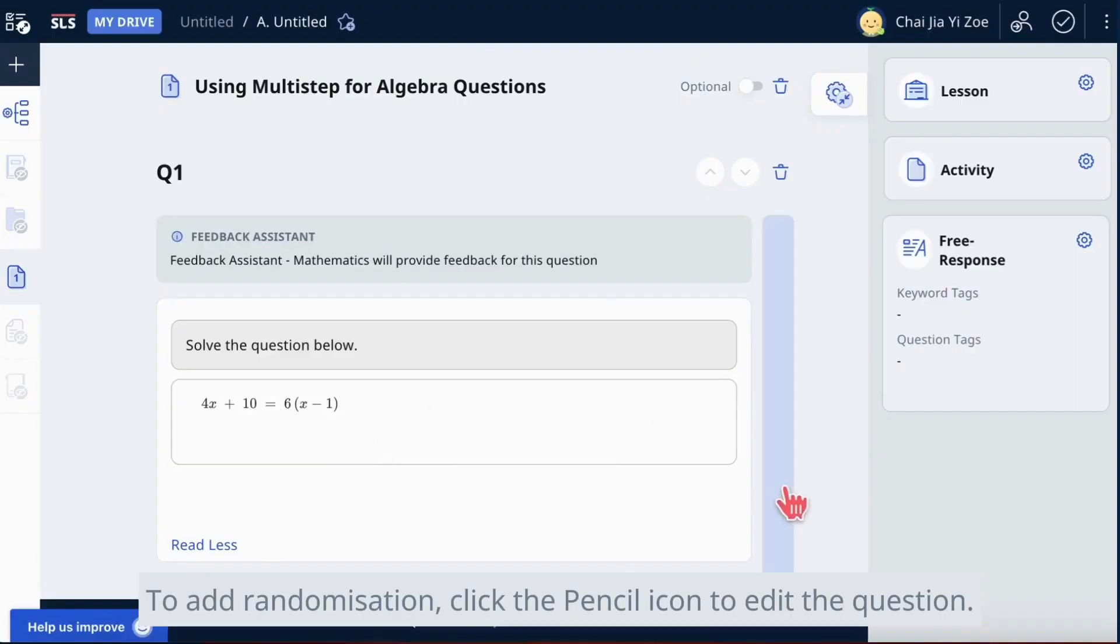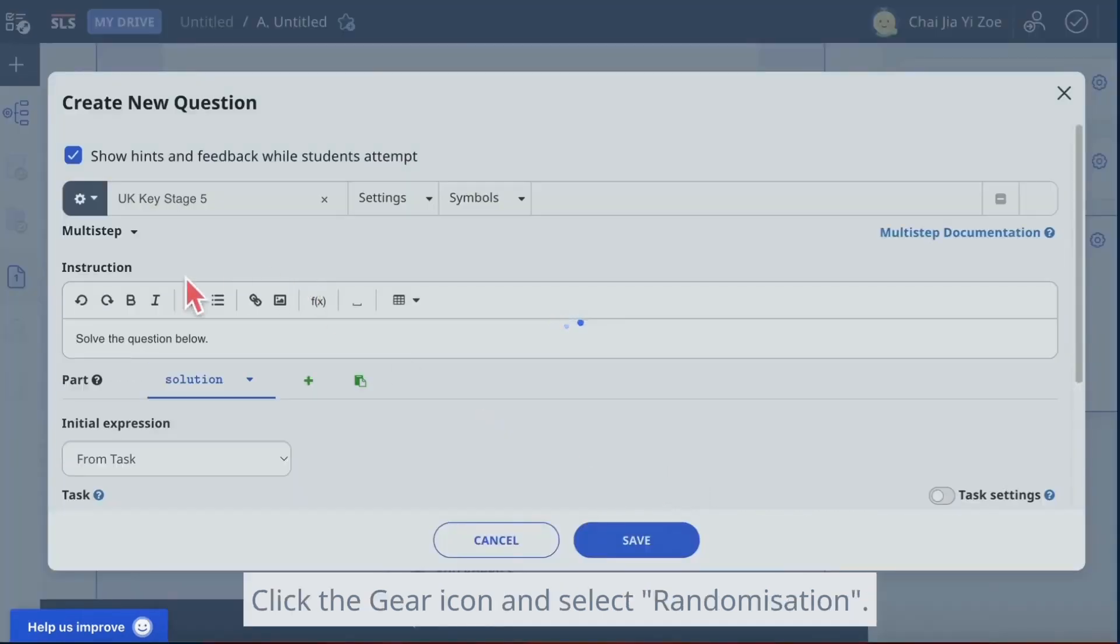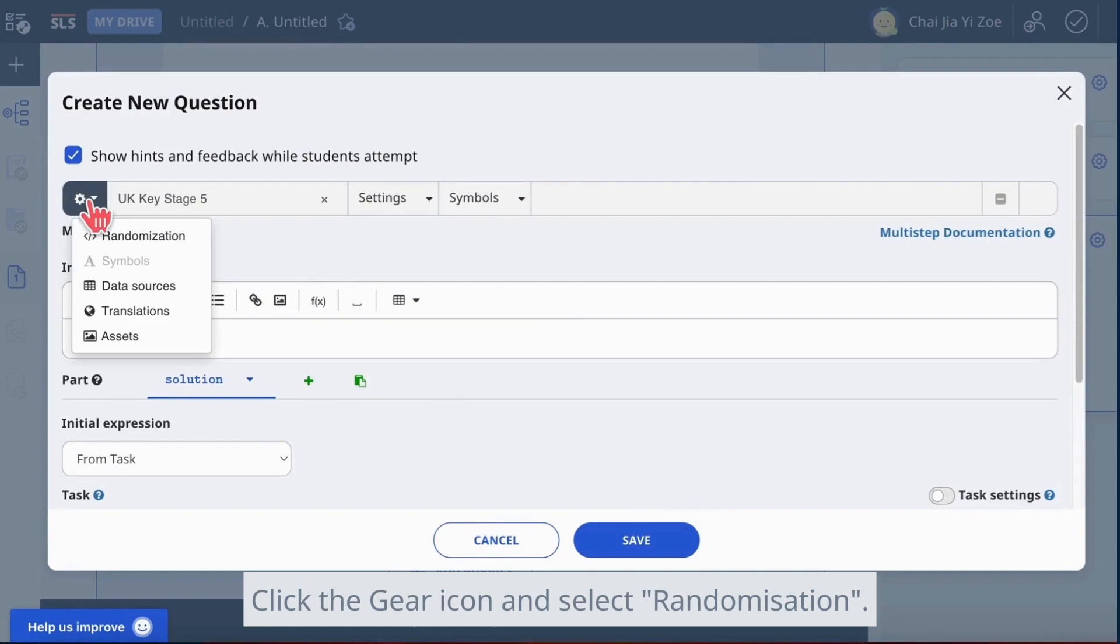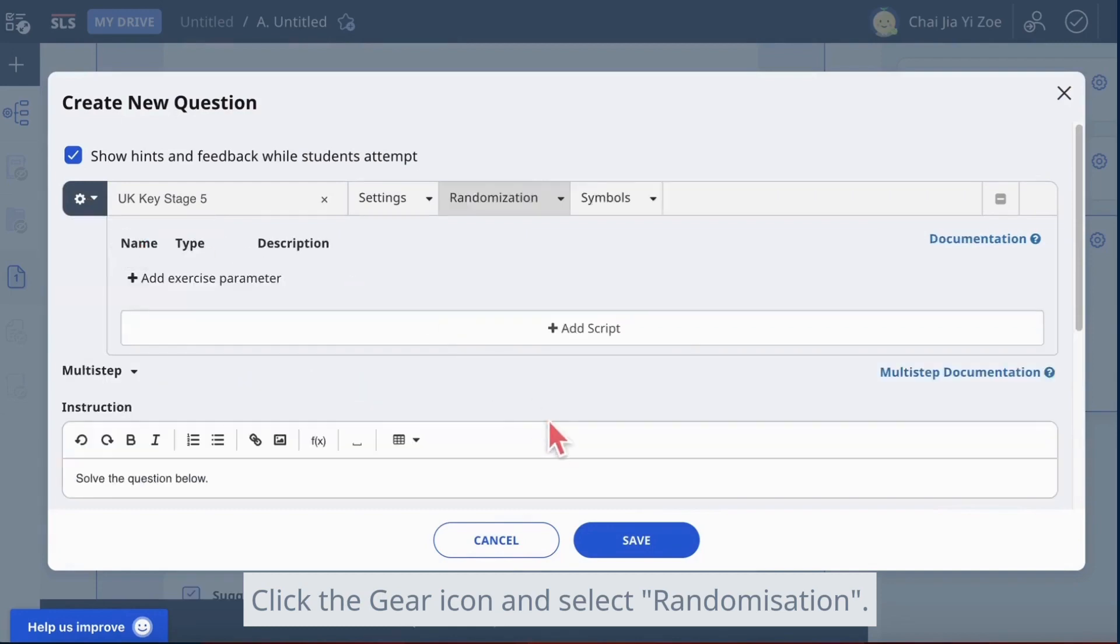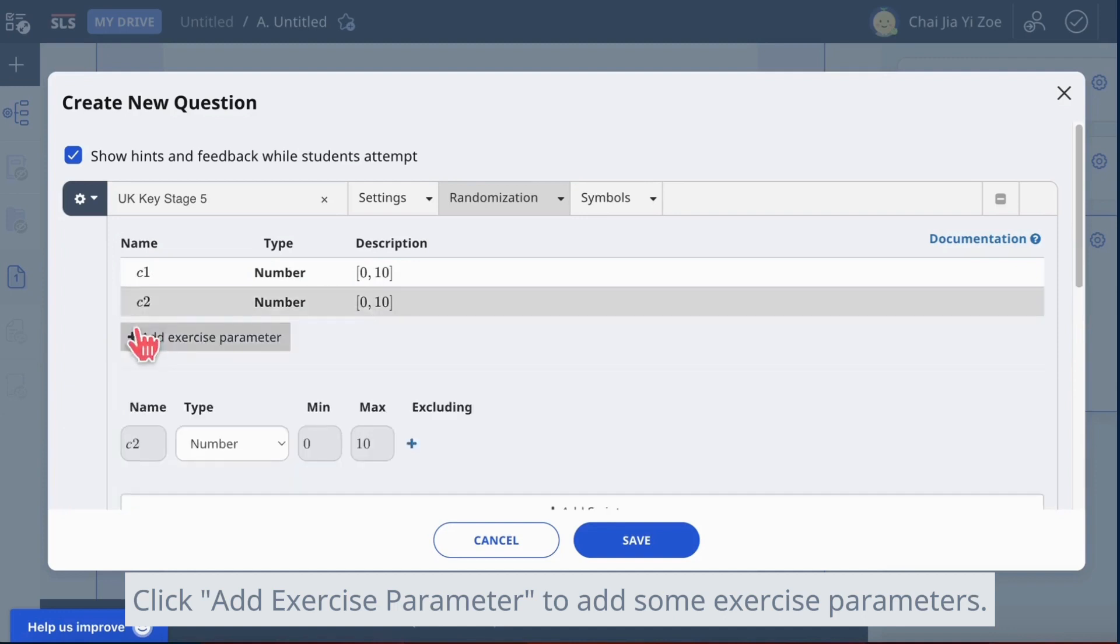To add randomization, click the pencil icon to edit the question. Click the gear icon and select randomization. Click add exercise parameter to add some exercise parameters.